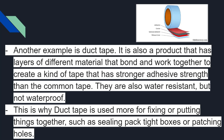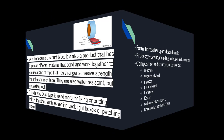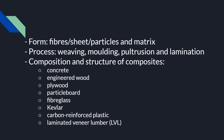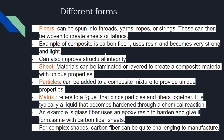Here are the different forms of composites and the processes used to make them. Examples include concrete, engineered wood, plywood, fiberglass, Kevlar, carbon reinforced plastics, and laminated veneer lumber. Composites can be found in the form of fibers, sheets, particles, or matrix.